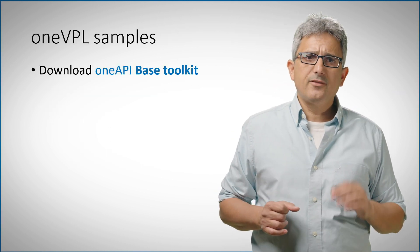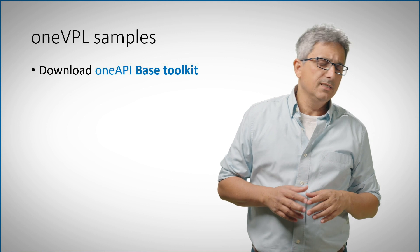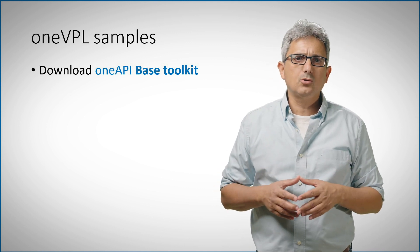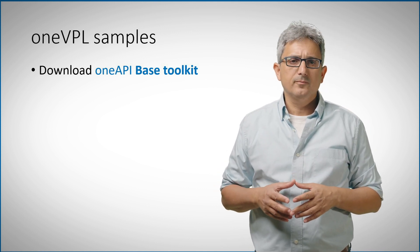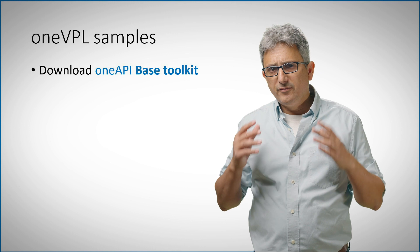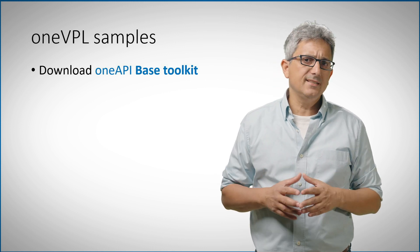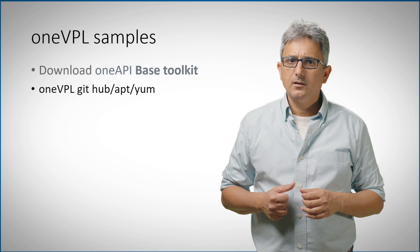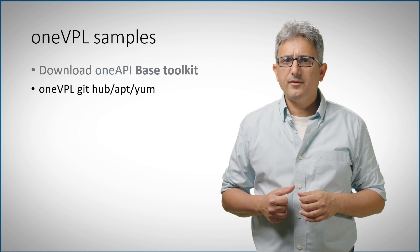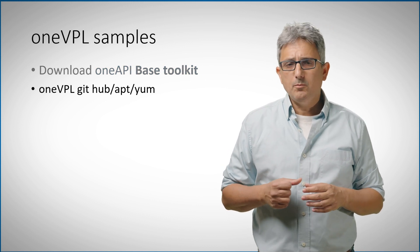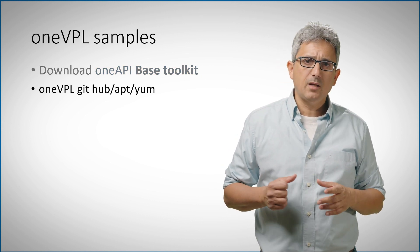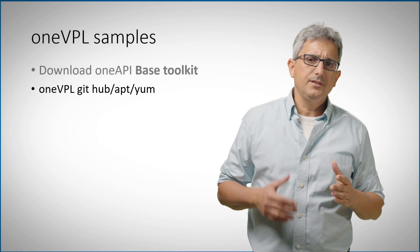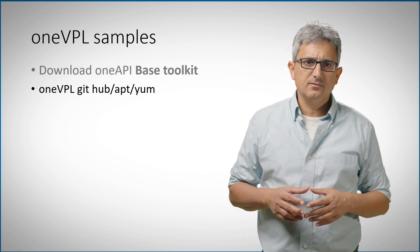There are a few ways to get OneVPL. First, simply download and install the OneAPI base toolkit — it's available for installation in multiple ways, check the base toolkit video. You can also find the OneVPL code samples and more on GitHub, and install using apt, yum, and other packages.